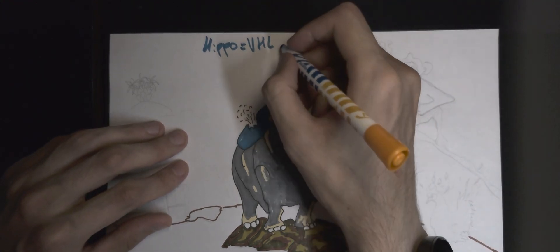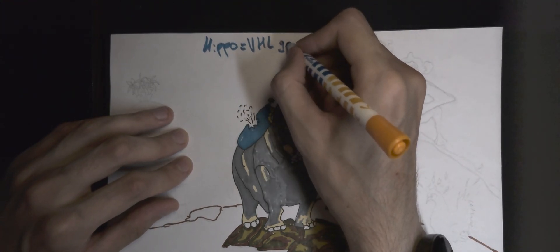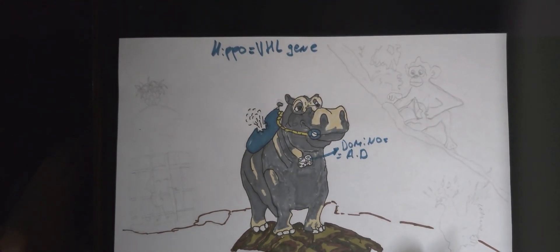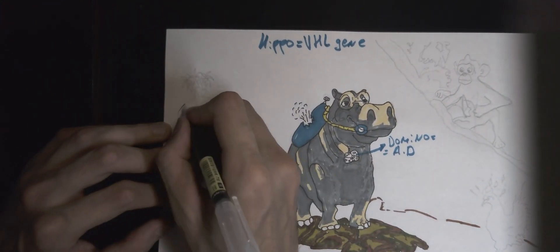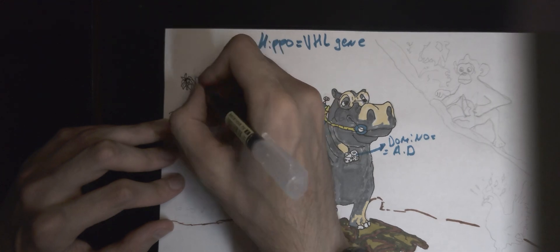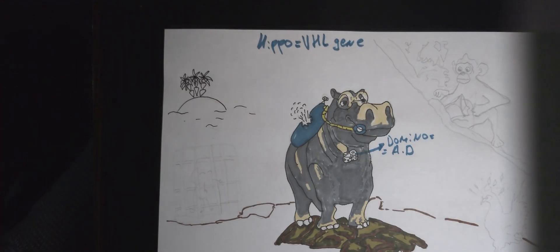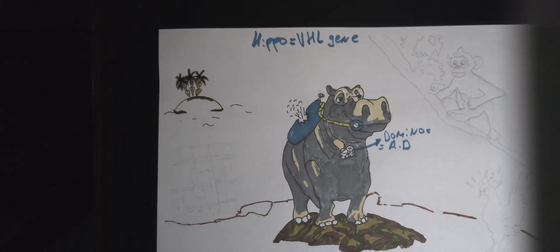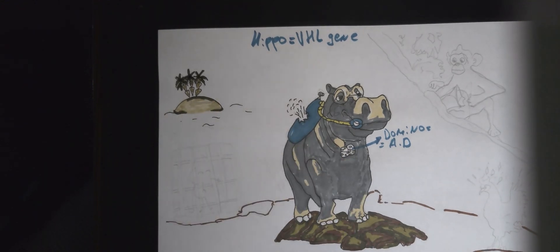Domino Necklace means that the disease is inherited in an autosomal dominant type of inheritance. What are the tropics without an island with palm trees? Palm trees sound like number 3, which will help us remember that the VHL gene is located on chromosome number 3.